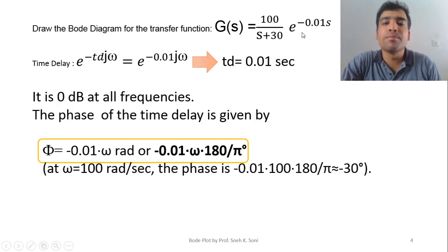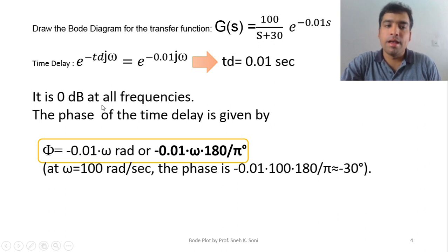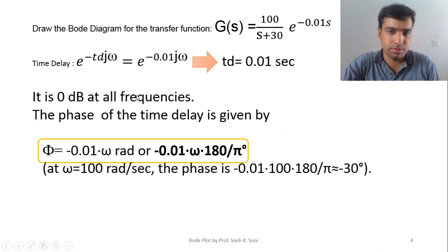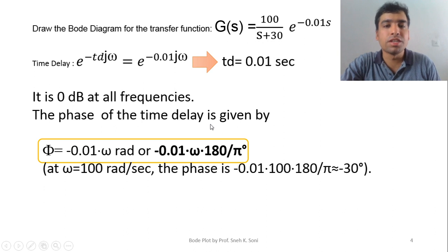Let's understand the delay term in detail. e^(-tds), when we replace s by jω, becomes e^(-td * jω). Comparing with e^(-0.01s) = e^(-0.01jω), the delay time td = 0.01 second. The delay term has 0 dB magnitude at all frequencies, which is why the magnitude plot is the same whether or not we consider this delay in the transfer function. However, the phase of the time delay is very important because it will change the phase drastically.